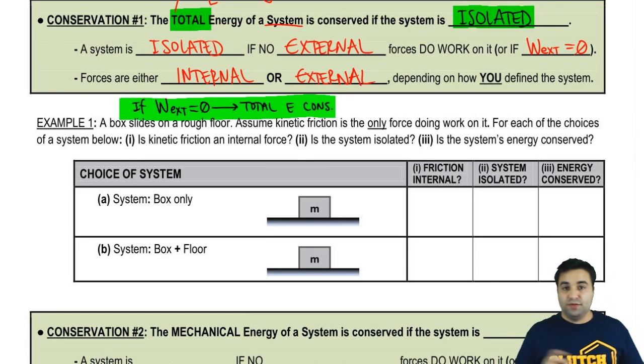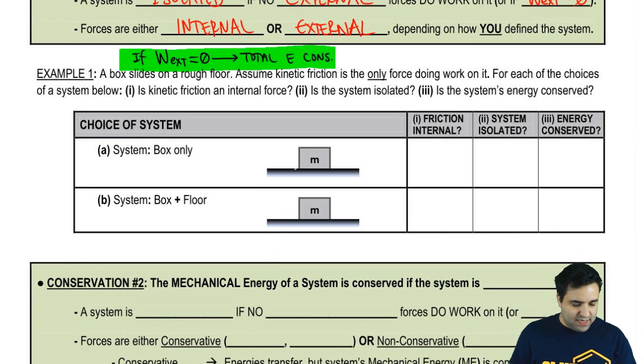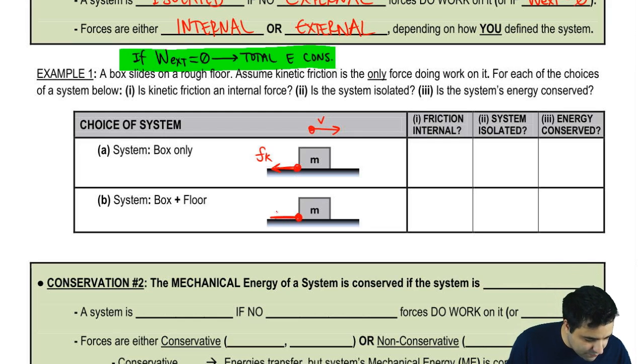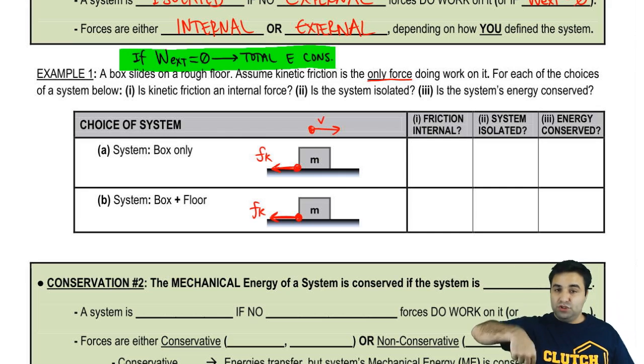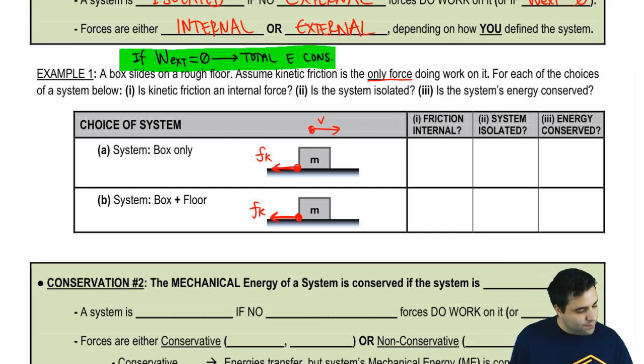Now, how to determine forces are internal or external? So let's see here. We have an example. Box slides on the floor, so let's say the box goes to the right with velocity V. I have kinetic friction. Kinetic friction is the rubbing friction. So it's opposite to motion, coming to the left over here. And this friction is between the floor and the box. It's the only force doing work on it. We have MG and normal, but they're perpendicular to motion, so they don't do work.